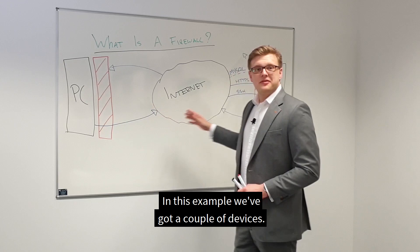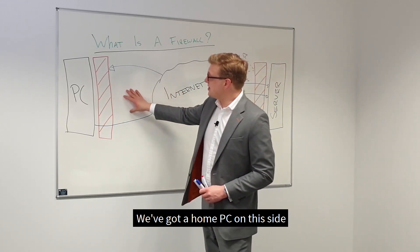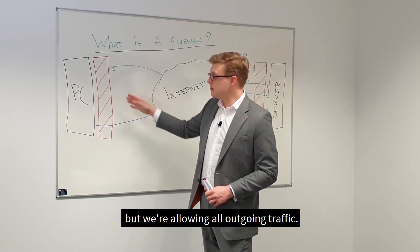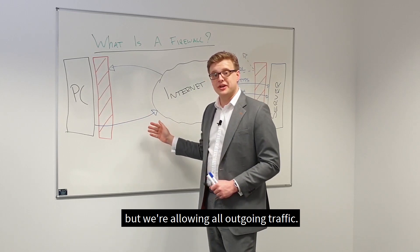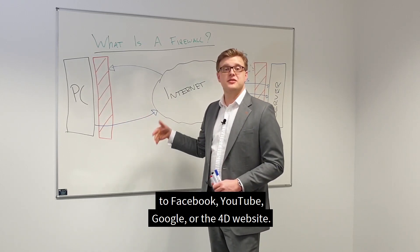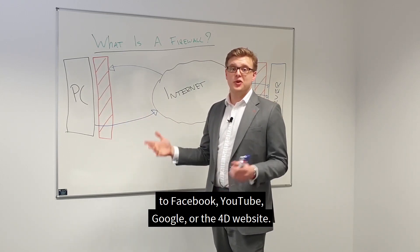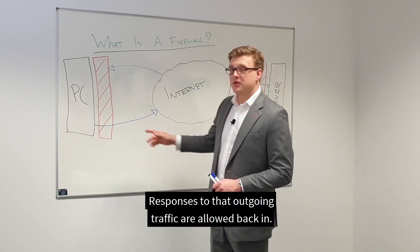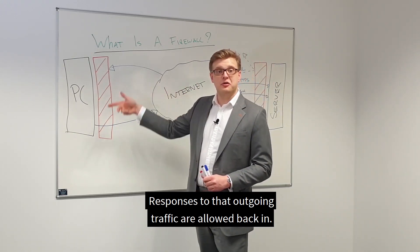In this example, we've got a couple of devices. We've got a home PC on this side where we've blocked all incoming traffic, but we're allowing all outgoing traffic. So that would be things like visits to Facebook, YouTube, Google or the 4D website. Responses to that outgoing traffic are allowed back in.